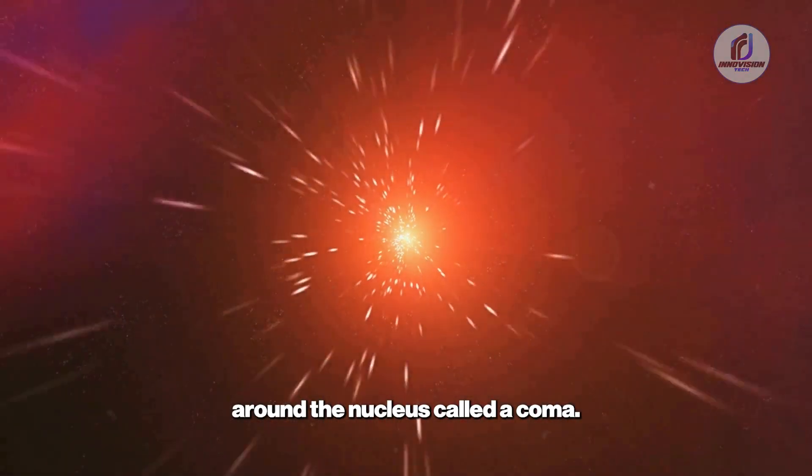Comet Physics 101: So, why is a sunward-pointing jet such a big deal? First, let's cover the basics. Comets are often called cosmic snowballs, a term coined by the brilliant astronomer Fred Whipple back in 1950. His model describes a nucleus made of ice, dust, and rock. As a comet approaches the sun, solar radiation heats its surface, causing ices like water to turn directly into gas, a process called sublimation, at temperatures above minus 100 degrees Fahrenheit. This process creates a glowing atmosphere around the nucleus called a coma.